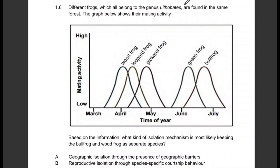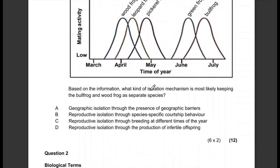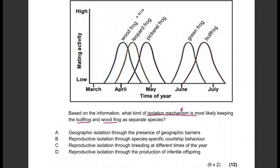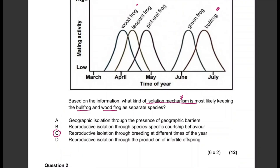Question 1.6: Different frogs which all belong to the same genus are found in the same forest. The graph shows their mating activity, the names of the different frogs, the time of year, and their mating activity. Based on the information, what kind of isolation mechanism is most likely keeping the bullfrog and wood frog as separate species? The correct answer is C: reproductive isolation through breeding at different times of the year — the bullfrog breeds around June/July and the wood frog around April.